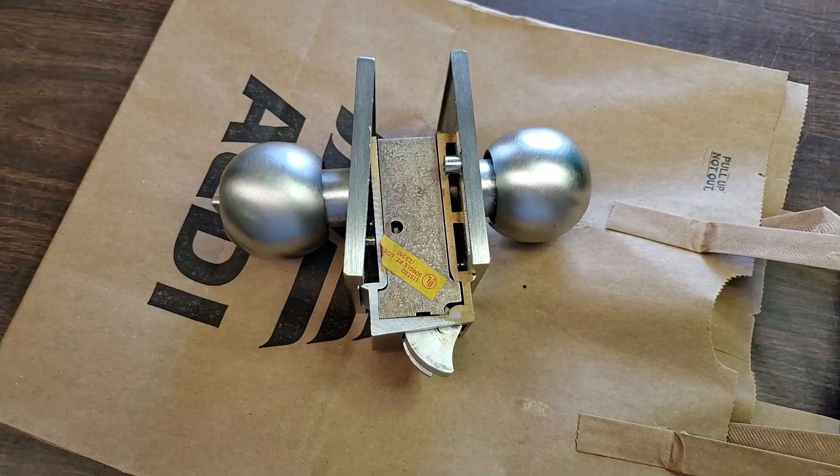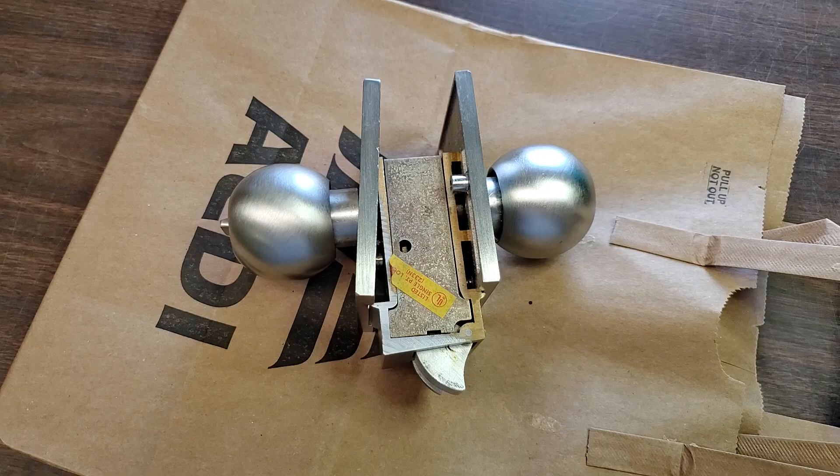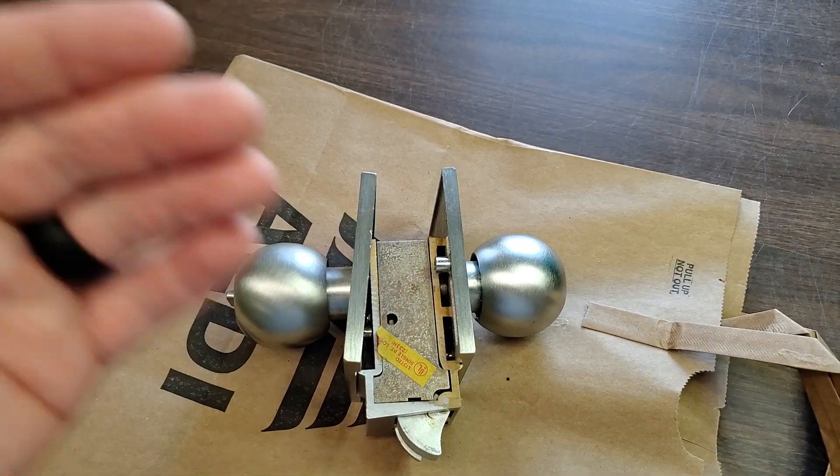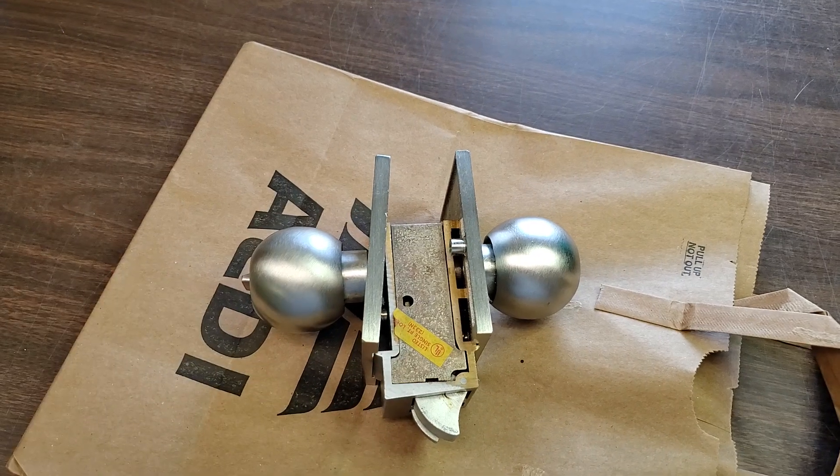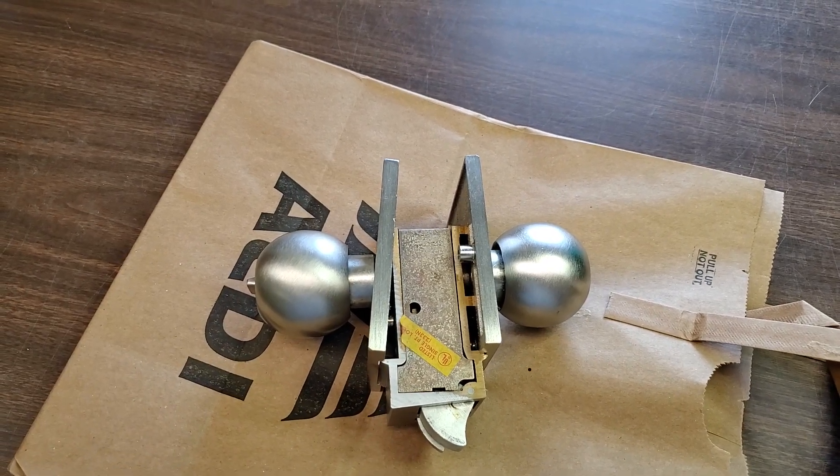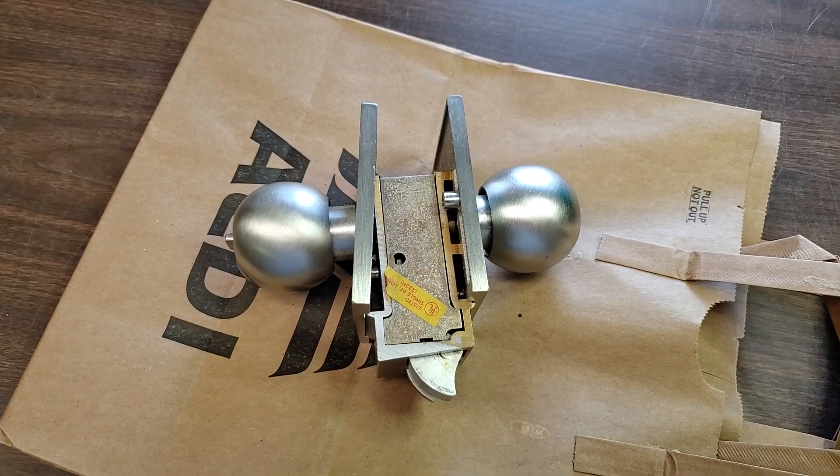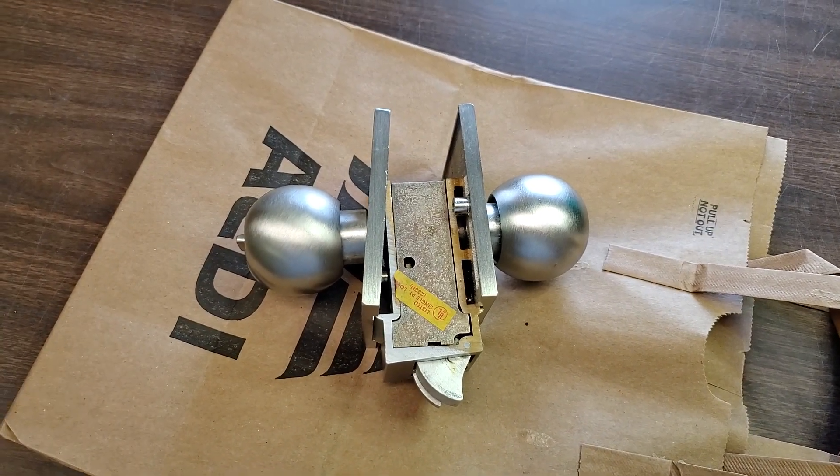typically they would have to bore a hole into the front and back of the door, and then bore a hole in the side of the door, so the front and back is for the door handles, either tubular or cylindrical, and then the side is for the latch.